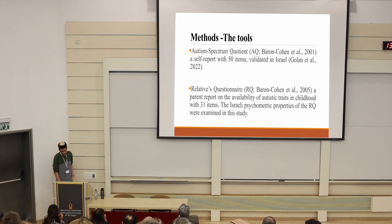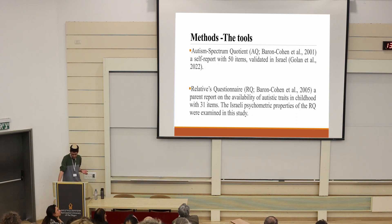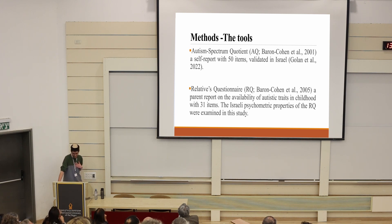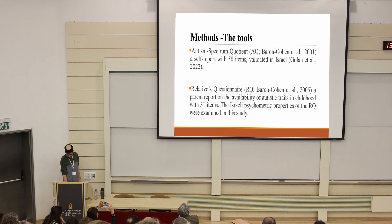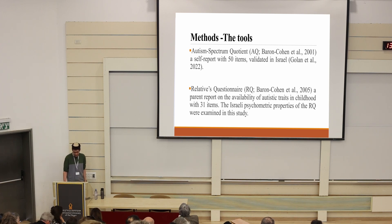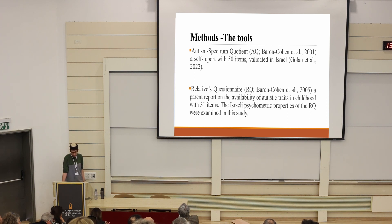To test this hypothesis, we're using the AQ and the RQ. The AQ, the Autism Spectrum Quotient, was developed by Simon Baron-Cohen in the United Kingdom in 2001, and validated only recently in Israel. It's a self-report with 50 items, and it assesses various social interaction, communication, and repetitive behavior questions.